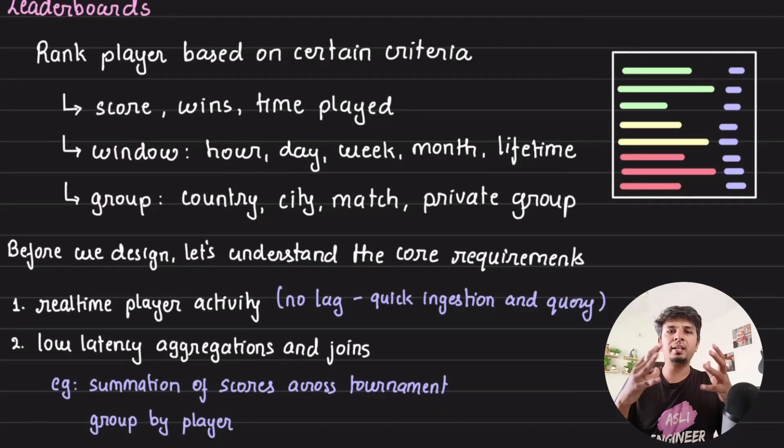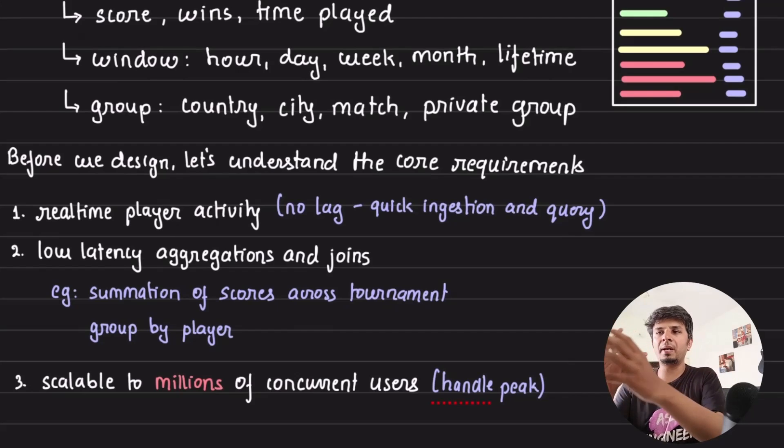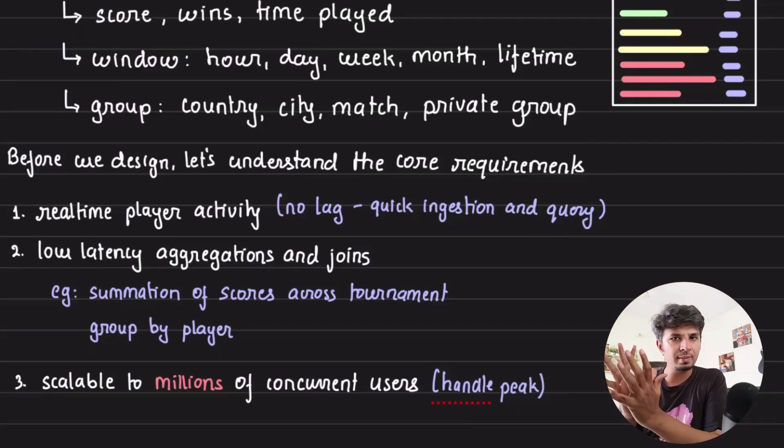Let's say you are playing a game and you want to see who is first, who is second, who is third based on score, wins, time played—a bunch of parameters split by multiple windows: hourly, daily, weekly, monthly, lifetime, and grouped by particular region or private group or city or match or competition. So many criteria. You need to solve all this problem with very low latency. Before we go directly into designing and looking at the architecture, let's take a step back to understand what are our core requirements.